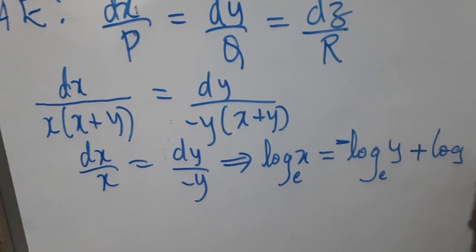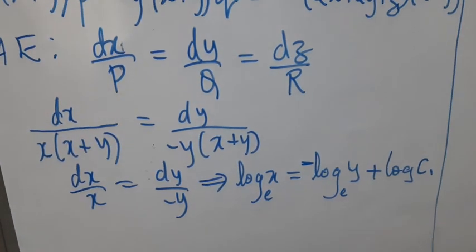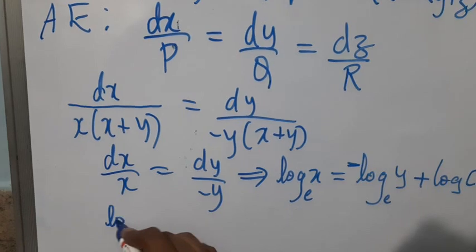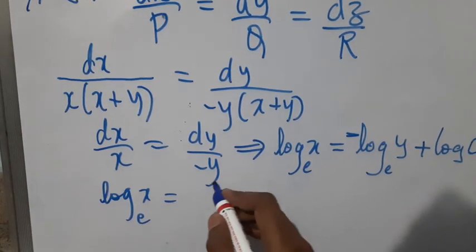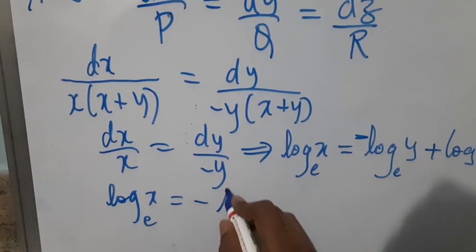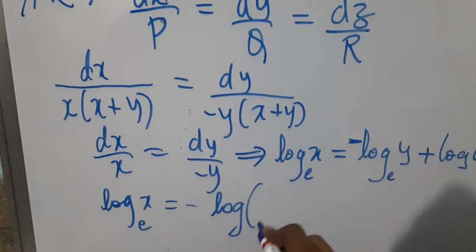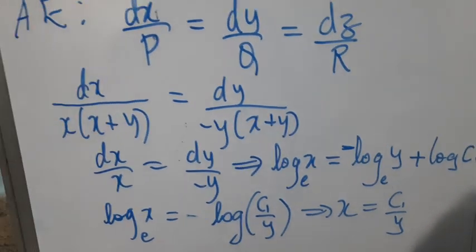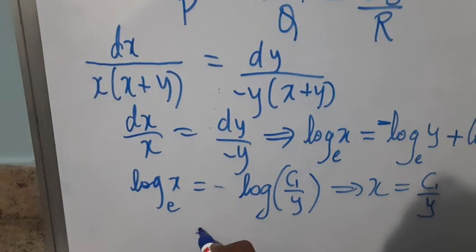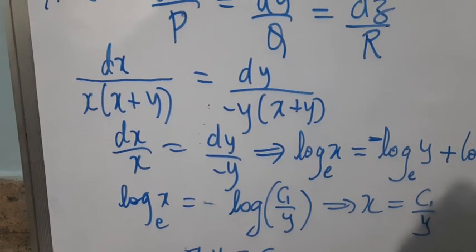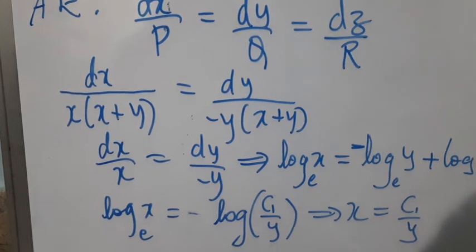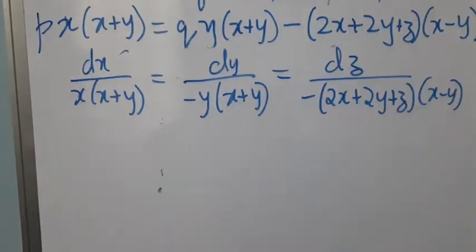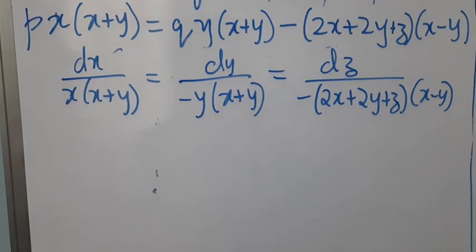Integrating, we get log X equal to minus log Y plus log C1, so log X equal to log(C1/Y), giving X equal to C1/Y. Therefore XY equal to C1, so we choose U equal to XY. Now we need to choose multipliers to get one more solution.